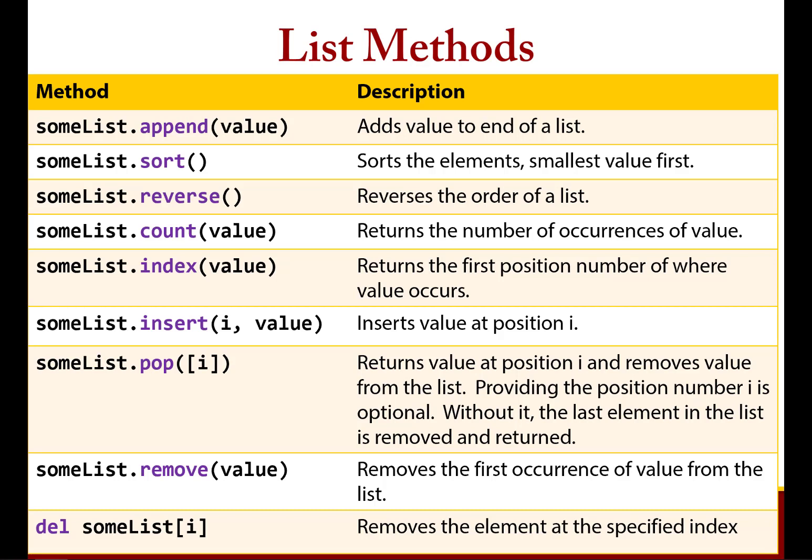So just like strings have special methods, lists have some really powerful methods — a method just being a function that's uniquely part of this list object. You can see a bunch are listed here, and we're going to go through a few of them now.